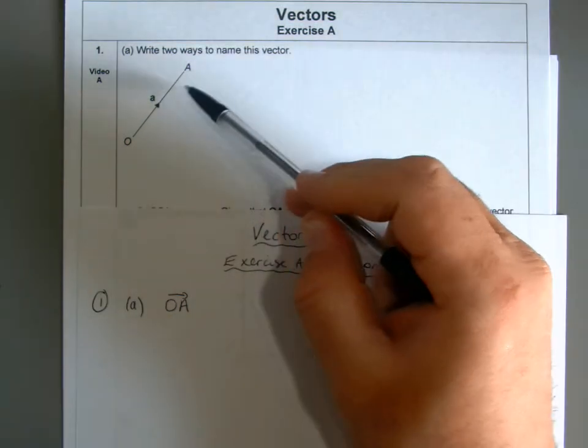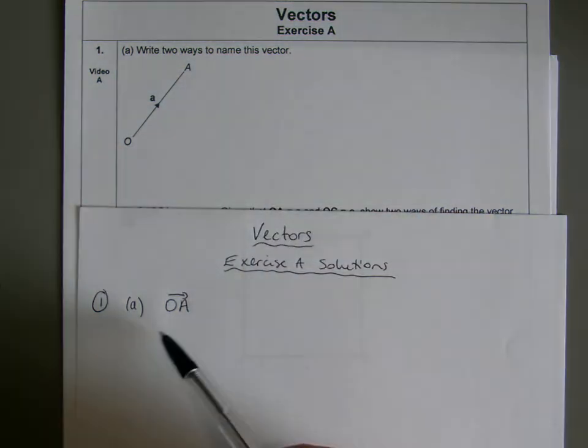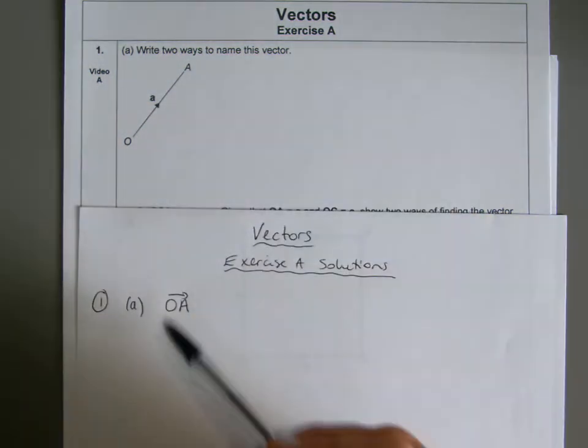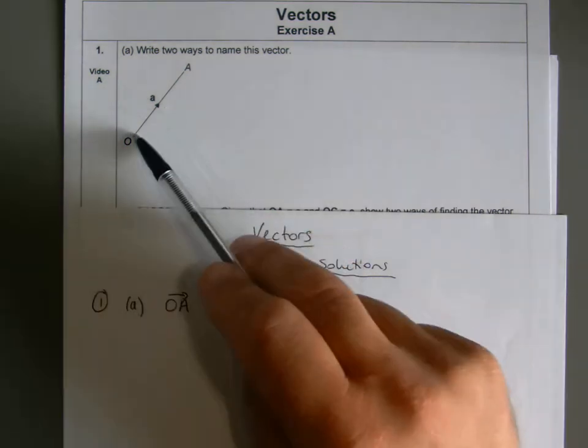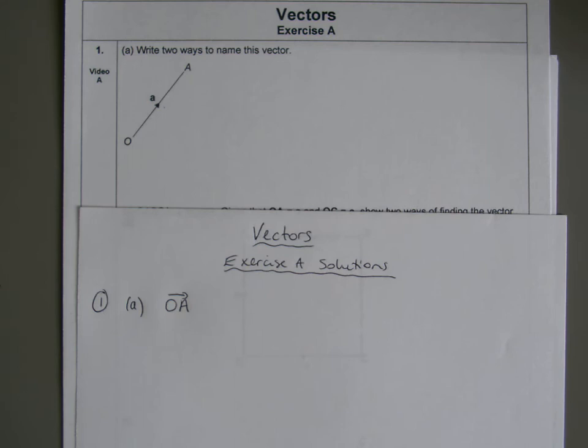If I had the arrow going that way, we would write AO. So we put it the other way around, we say AO with the arrow obviously going from A to O. But the arrow is going that way, so we're going from O to A.